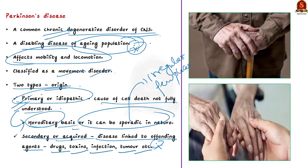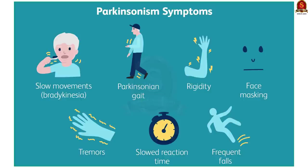Now let us look at the symptoms of this disease. The symptoms include slow movements, rigidity, slow reaction time, frequent falls, Parkinsonian gait, and face masking. Here, gait means a person's manner of walking, and face masking means an expressionless face with little or no sense of animation.